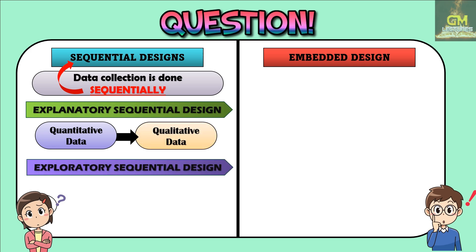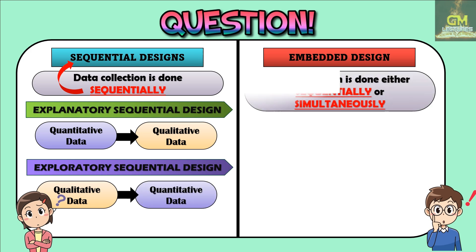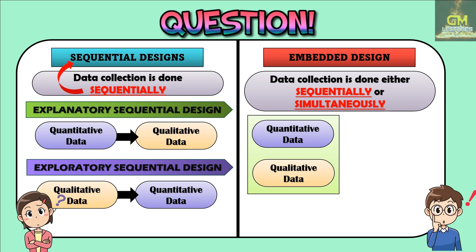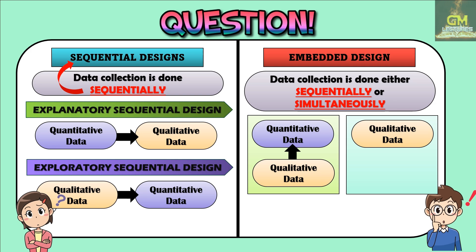In an exploratory sequential design, the qualitative data is collected first, followed by the collection of the quantitative data. Whereas in an embedded design, the data collection is done either sequentially or simultaneously. As mentioned, in an embedded design, the collection of the secondary form of data may be done before, during, or after the collection of the primary form of data. We can have quantitative data as the primary form with qualitative data as the secondary form to help support or augment it, or vice versa.